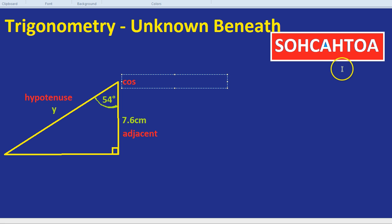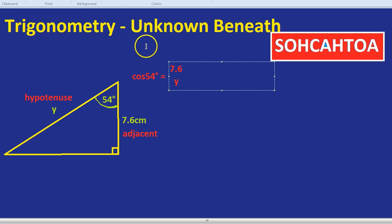So cosine but then we don't write equals we write cosine of the angle. It's always sine the angle, cosine the angle, tan the angle. In this case cosine of 54. It lets the calculator know which angle you're talking about because otherwise you get different answers if you pick different sides and different angles. So cos of 54 equals, so it would be 7.6 divided by Y. Now how do we work that out?